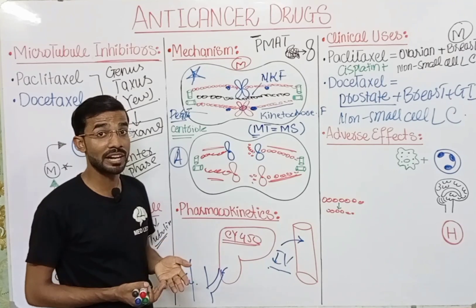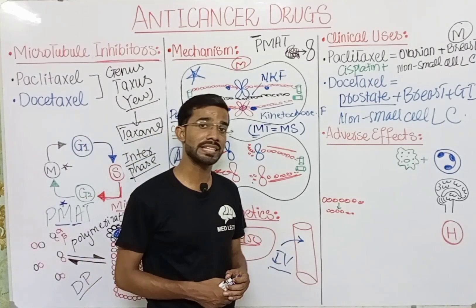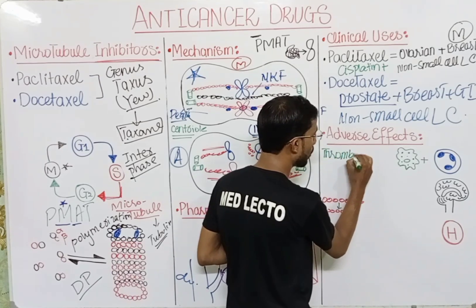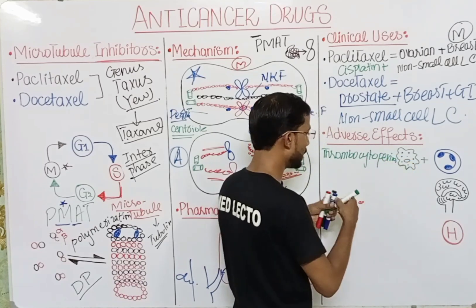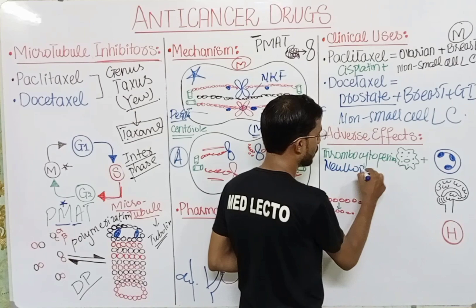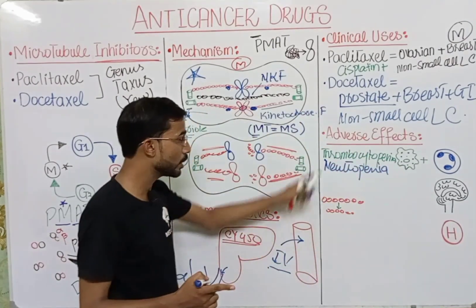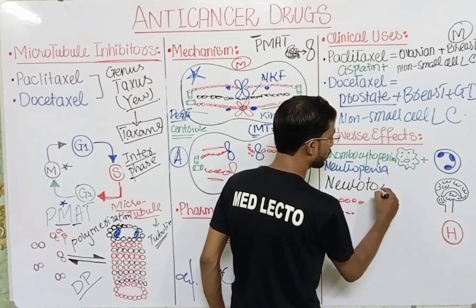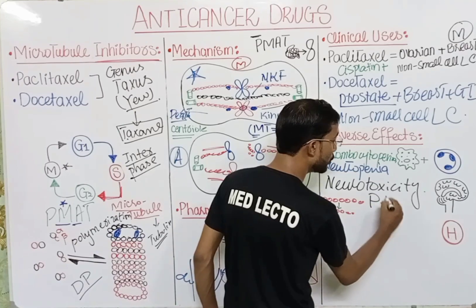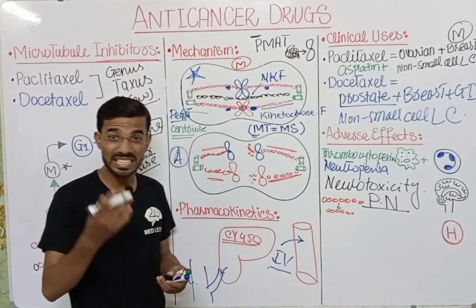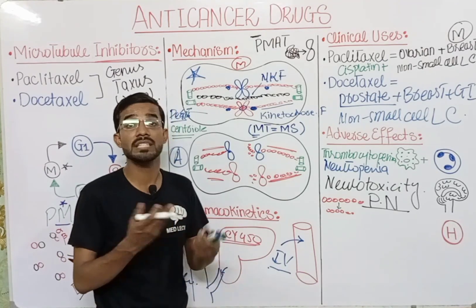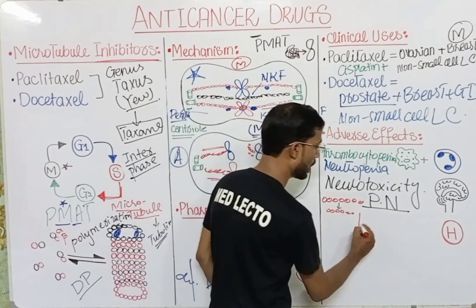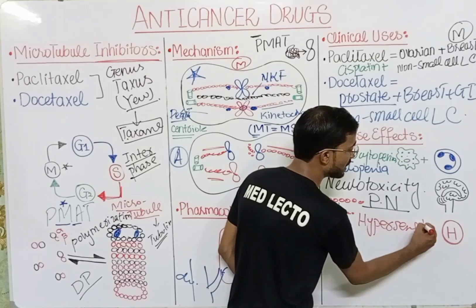Regarding adverse effects of the taxane family drugs: first, you will see thrombocytopenia — low number of platelets — and neutropenia — low number of neutrophils, which are white blood cells. Next is neurotoxicity, also described as peripheral neuropathy. You can also see hypersensitivity reactions.